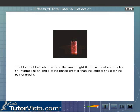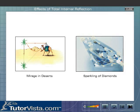Let us now discuss some of the effects of total internal reflection. Mirage in deserts and sparkling of diamonds are some of the effects of total internal reflection.